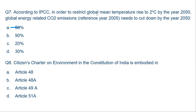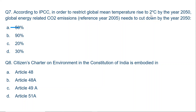Question 7. According to the IPCC, International Panel on Climate Change, in order to restrict global mean temperature rise to 2 degrees Celsius by the year 2050, global energy-related CO2 emissions relative to reference year 2005 need to be cut down by what percentage? The correct answer is A, 50%. So CO2 emissions need to be reduced by 50% compared to 2005 levels, in order to prevent global mean temperature rise, global warming, and sea level rise.